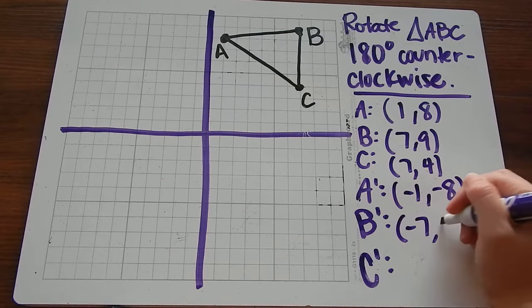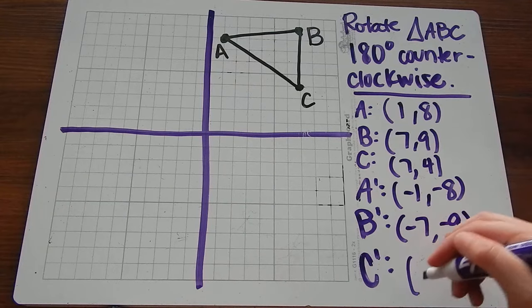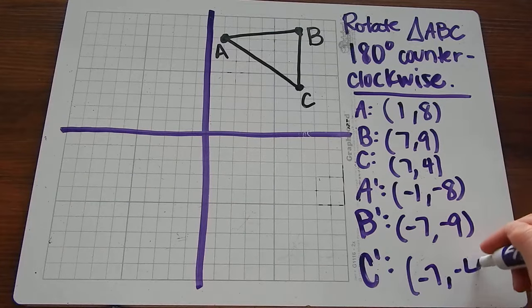B prime is (-7, -9). C prime is (-7, -4).